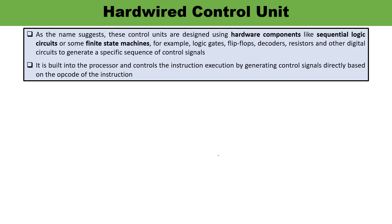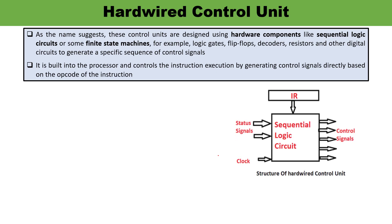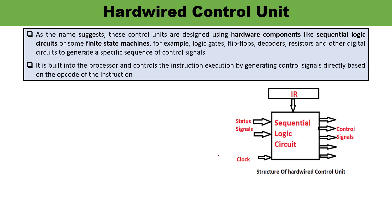The hardwired control unit — from its name you would be able to understand — is the kind of control unit which is designed by using hardware components to generate or produce control signals. The hardwired components may be in the form of logic gates, flip-flops, decoders, counters, and registers — the kinds of digital circuits. So here, the hardware components may be sequential logic circuits or finite state machines. Behind the block diagram there is a circuitry made from hardware components so that control signals can be generated.